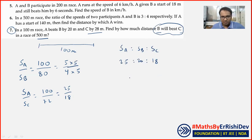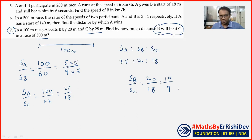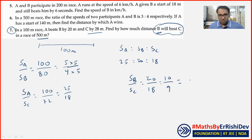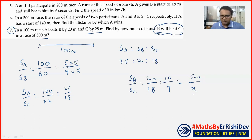کام ہو گیا! SA : SB : SC — جب SA = 25 تو SB = 20، اور جب SB = 25 تو SC = 18۔ SB upon SC = 20 upon 18 = 10 upon 9۔ 500 metre race میں B جیتے گا — B 500 میٹر بھاگے گا، C کتنا بھاگے گا؟ x مان کے چلتے ہیں۔